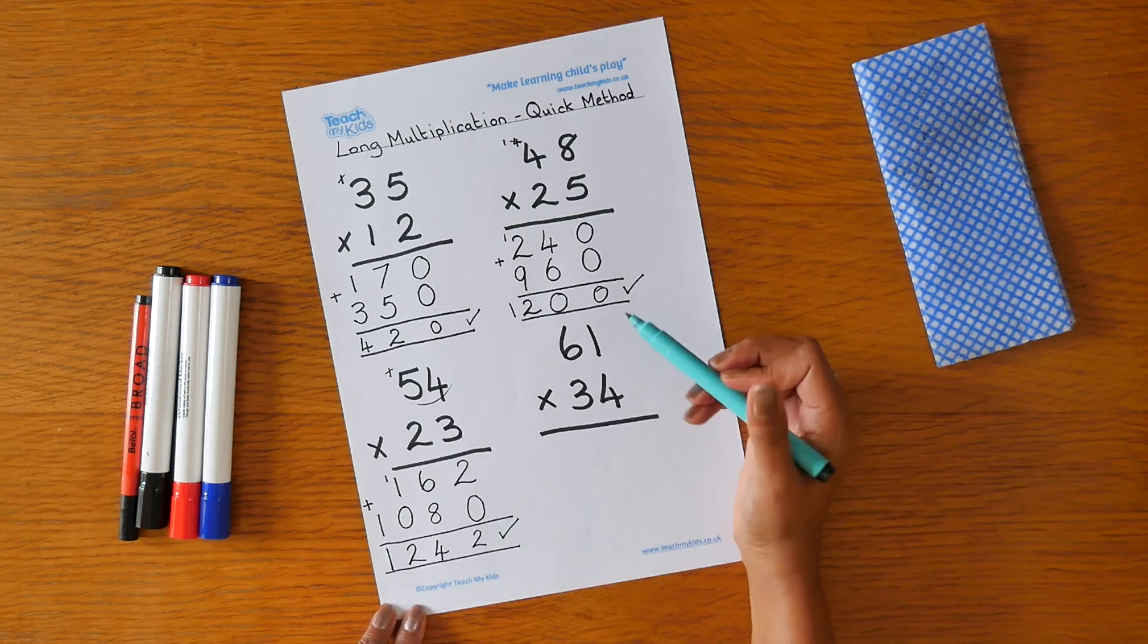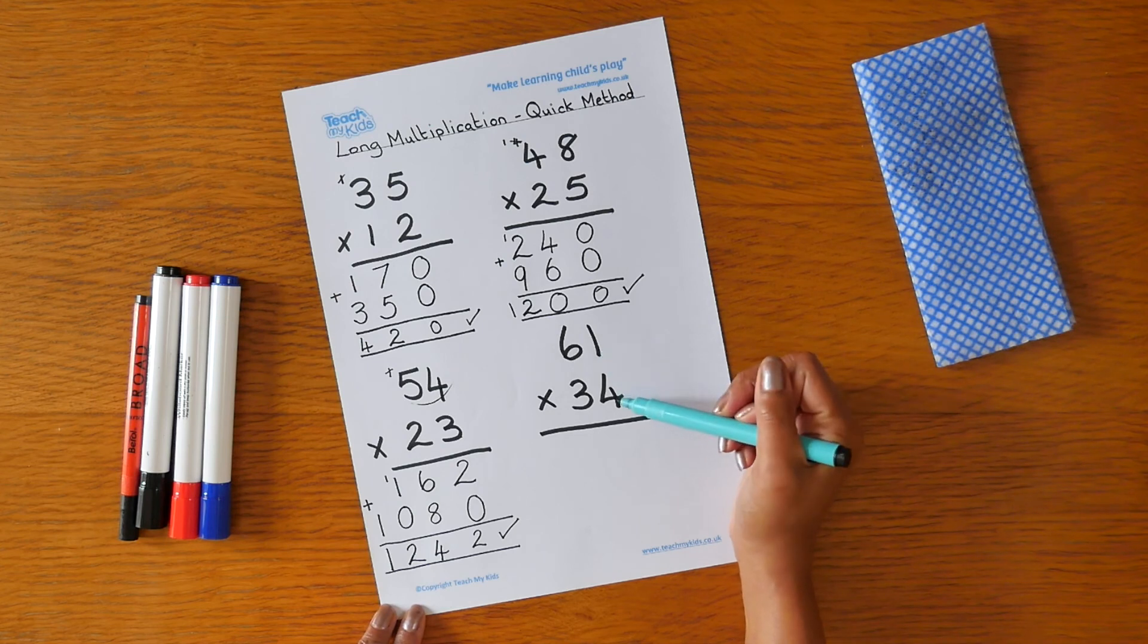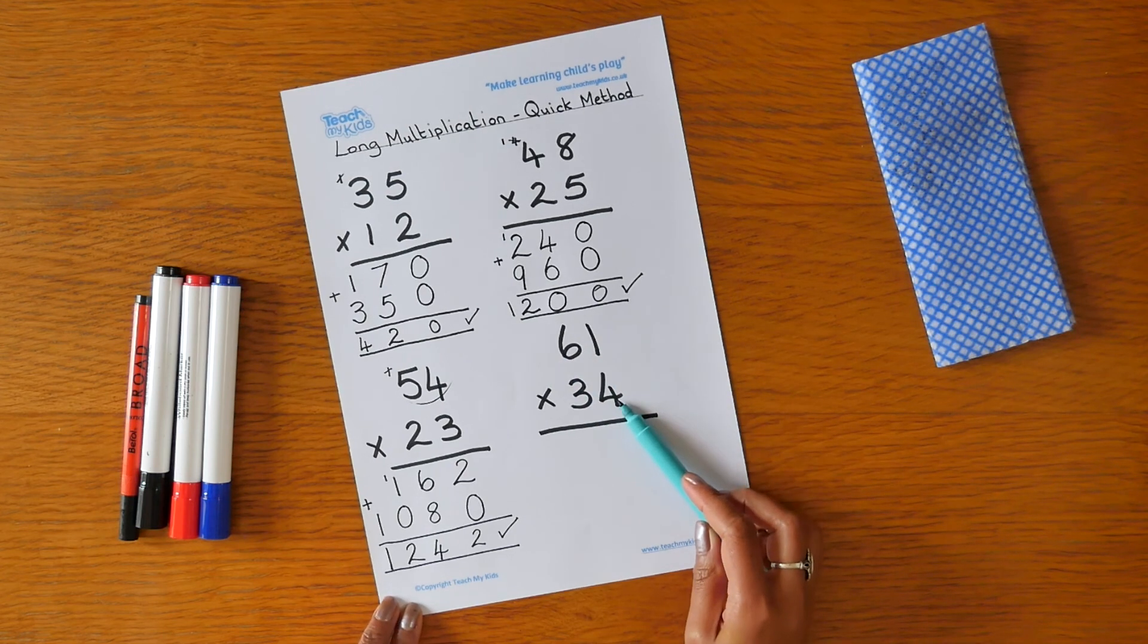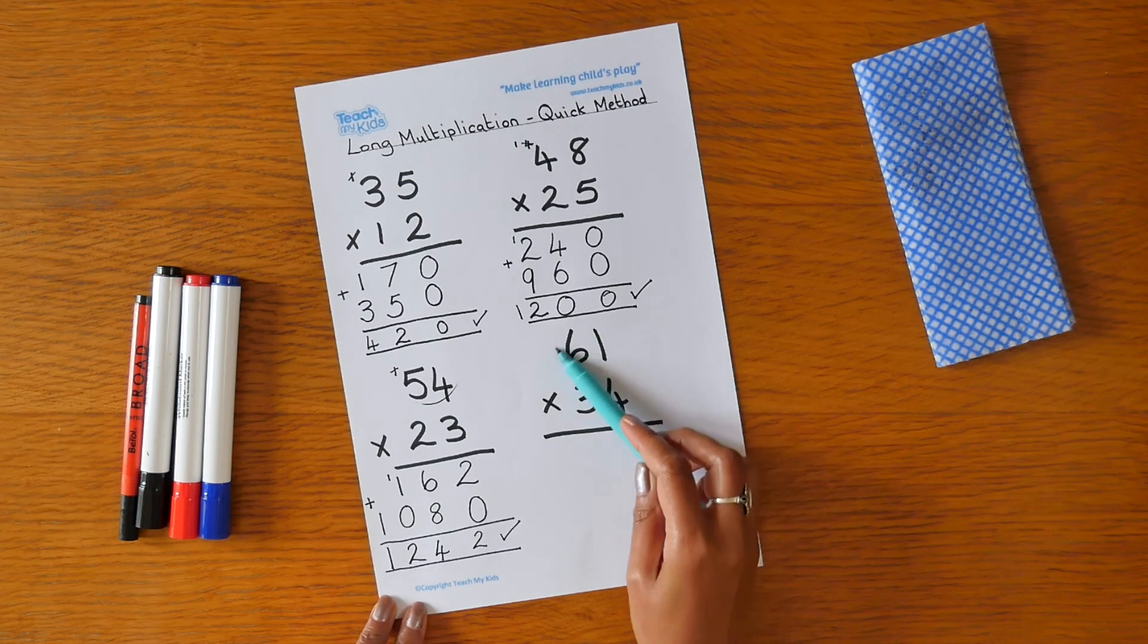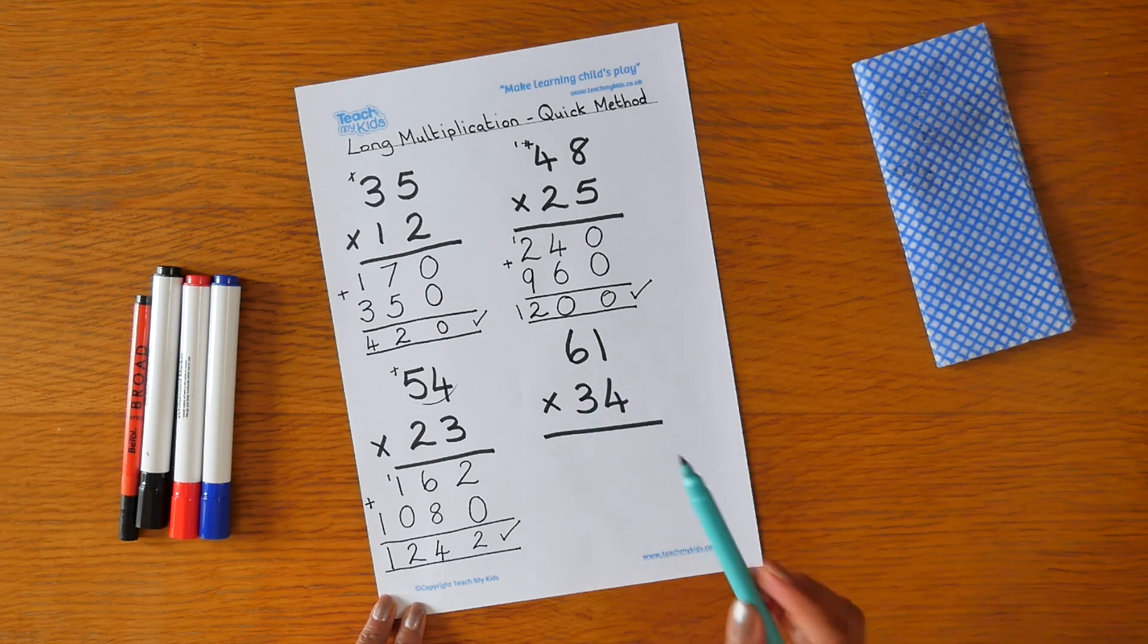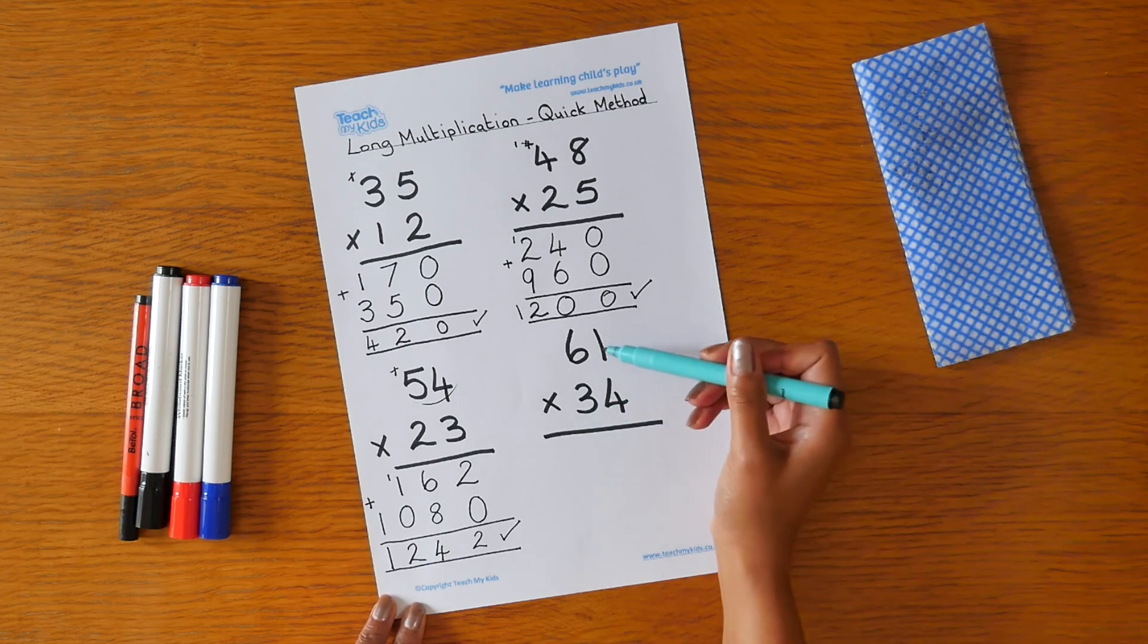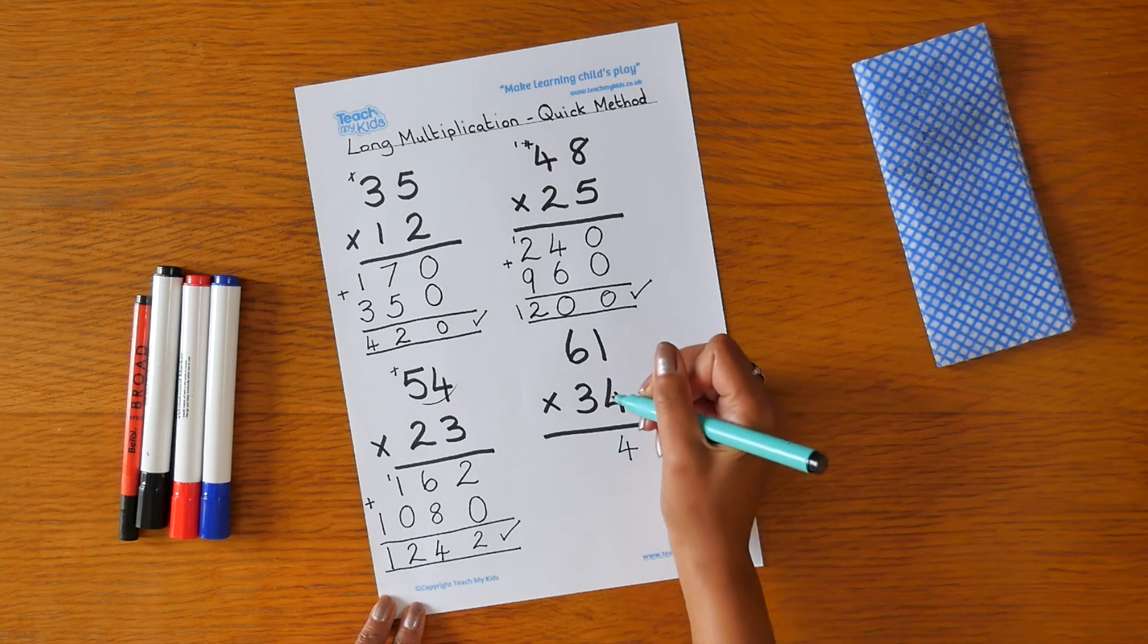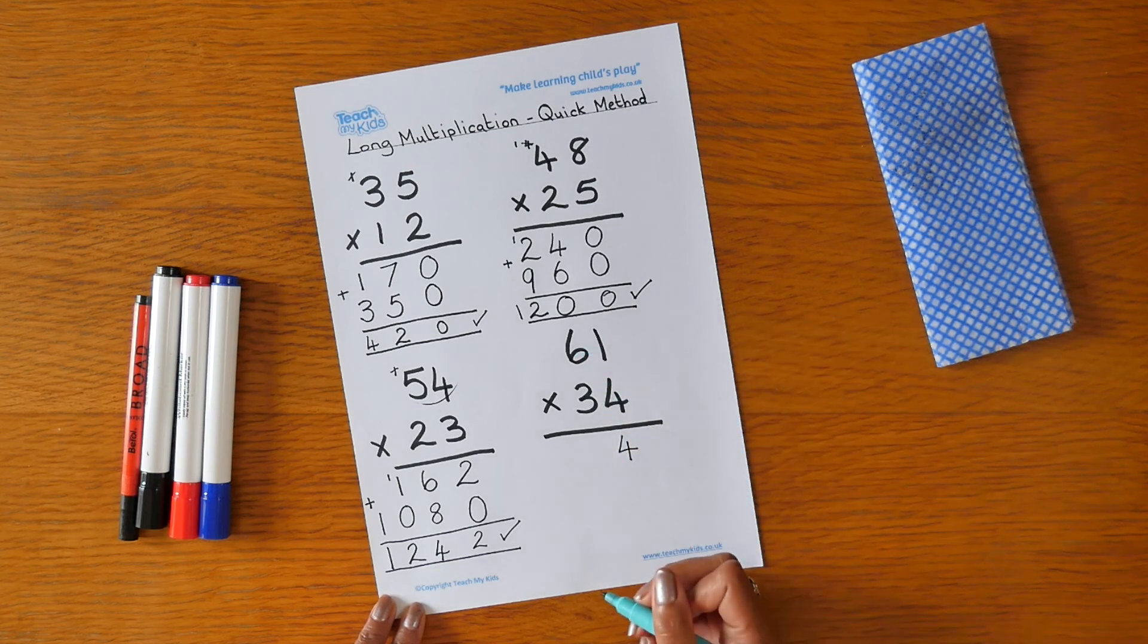Our final sum is 61 times 34. So again, we multiply the top number first by the 4, and then we multiply the top number by the 3. 4 times 1 is 4. 4 times 6 is 24.